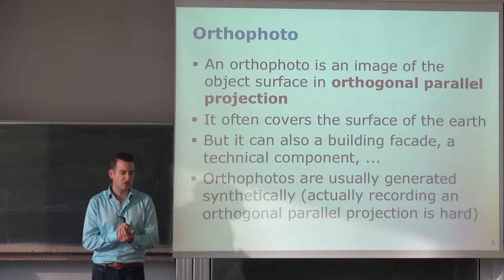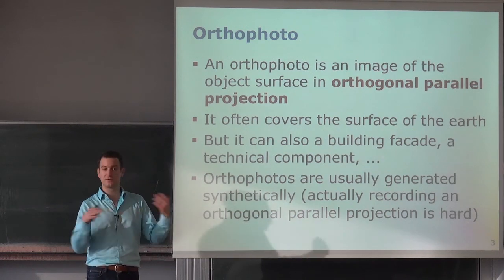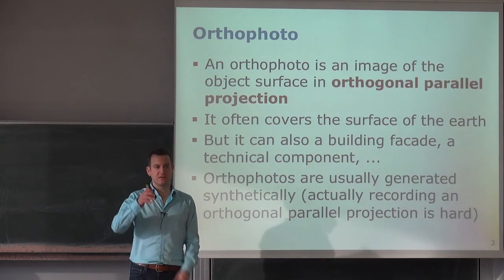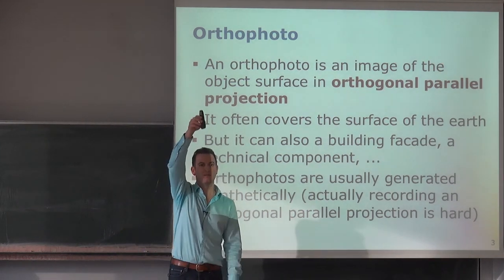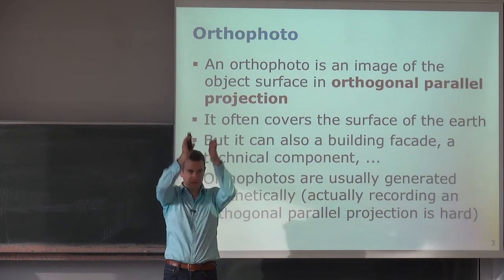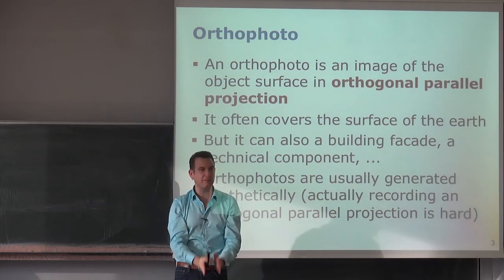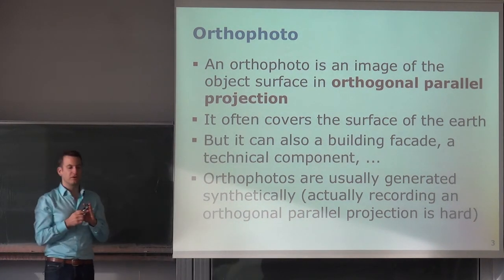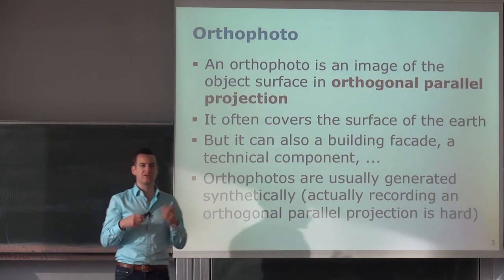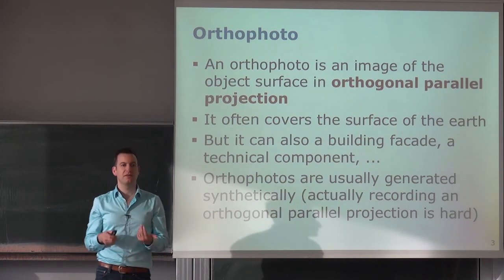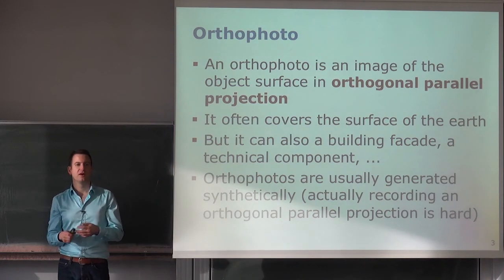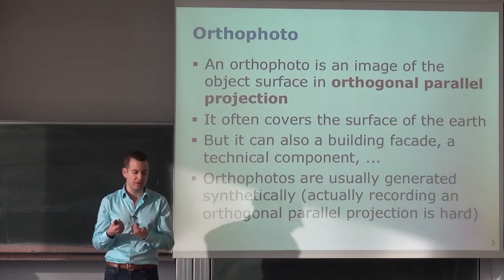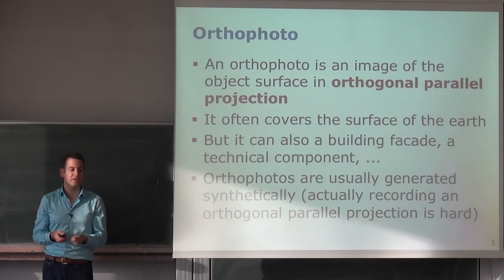An orthophoto is an image of the surface of an object — for example, the Earth — in an orthogonal parallel projection. The camera is infinitely far away pointing downwards, so all rays from the camera are parallel. There are different applications: the standard one is from aerial images of the Earth, but you can also use orthophotos to do measurements and evaluate the quality of a technical component or building.